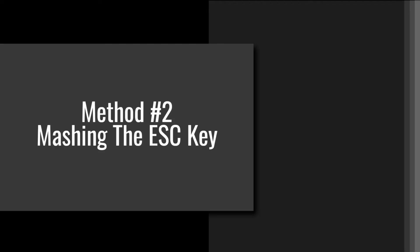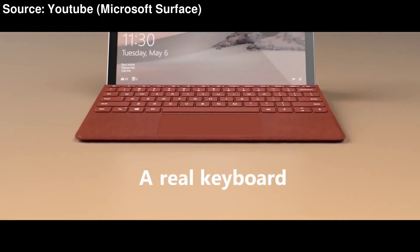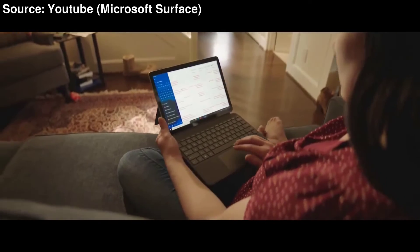Method number two: mashing the escape key. For this method, you need to have the Surface Go keyboard accessory, so if you don't have that, this method is not for you. Also, this method doesn't work when booting into Windows, so you have to be booting into some kind of Linux distro for it to have a chance of working.